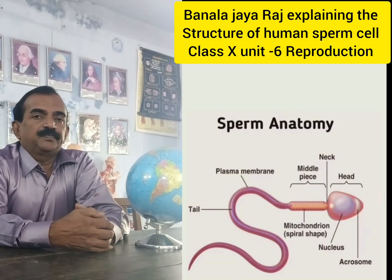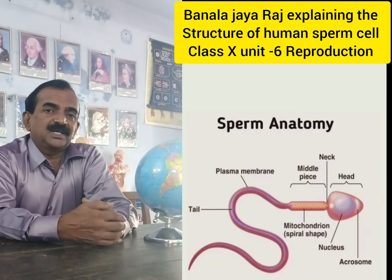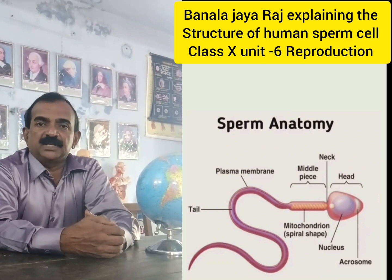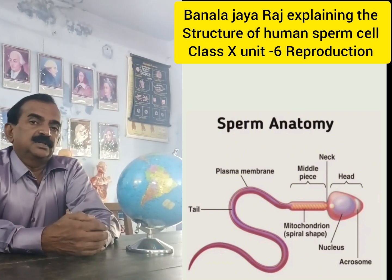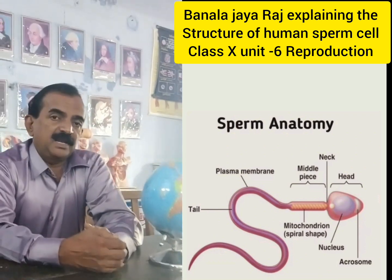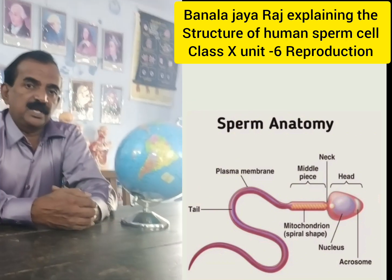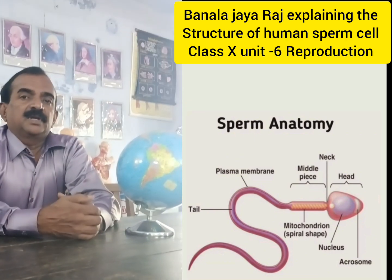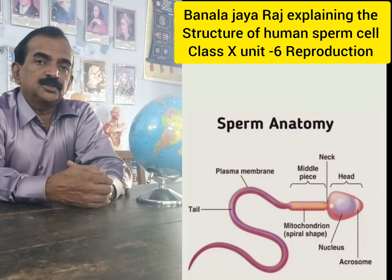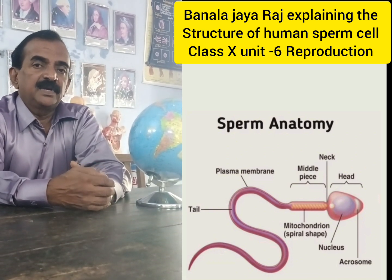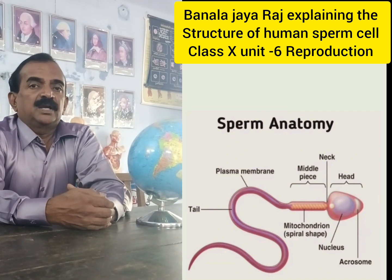In this video, we are going to learn about the structure of the human sperm cell. When a male reaches 13 to 14 years, during the adulthood stage, the testes begin producing millions and millions of sperms after the release of testosterone hormone.